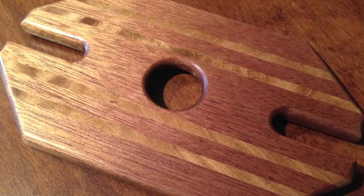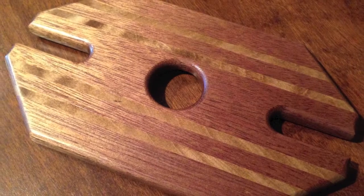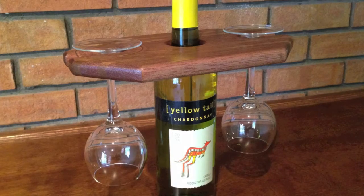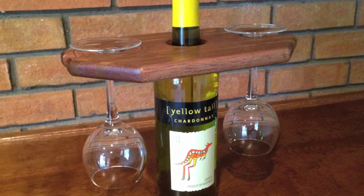Hey everybody, today I'm going to show you how I made this. It's a display that sits on top of your wine bottle that holds two wine glasses. I laminated strips of mahogany and maple together to get the striped look. Stick around if you want to see how I made it.